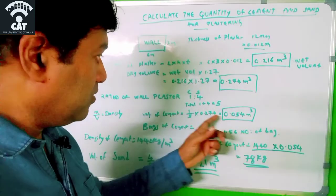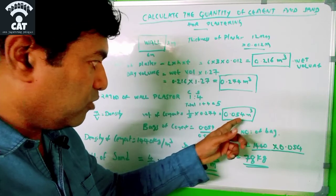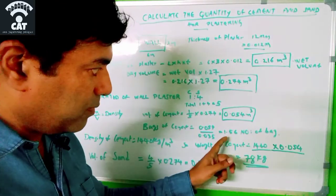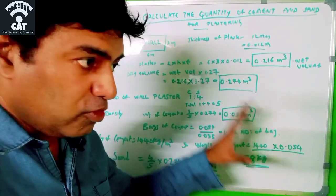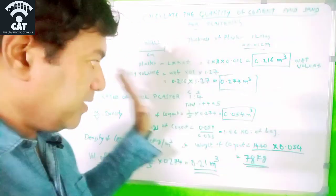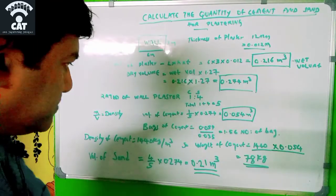So this volume of cement, 0.054 divided by volume of one bag, will give how many bags: 1.56 bags for this particular 6 × 3 wall plaster.